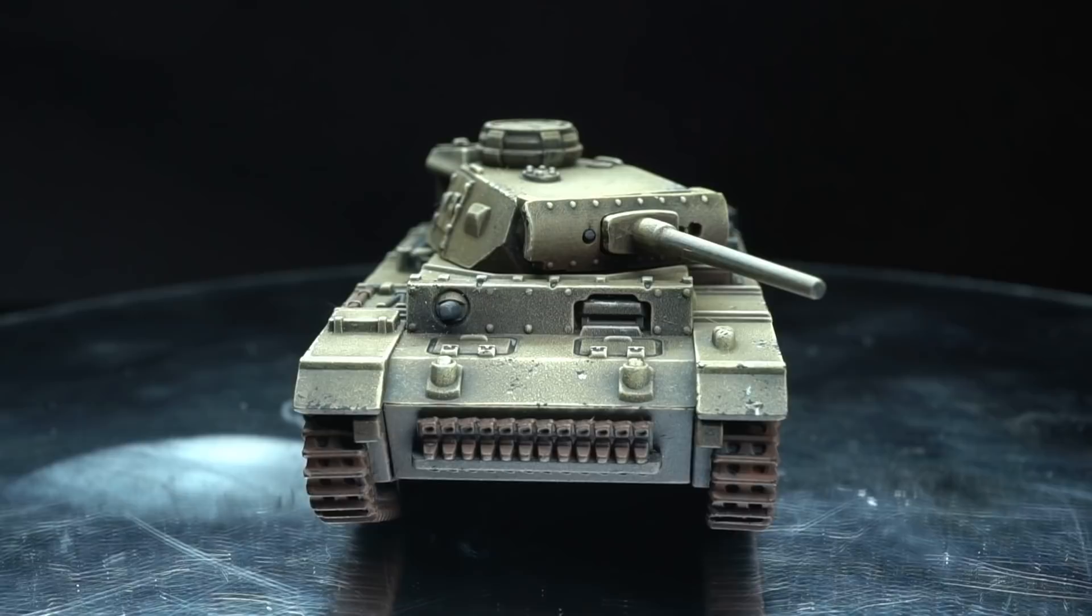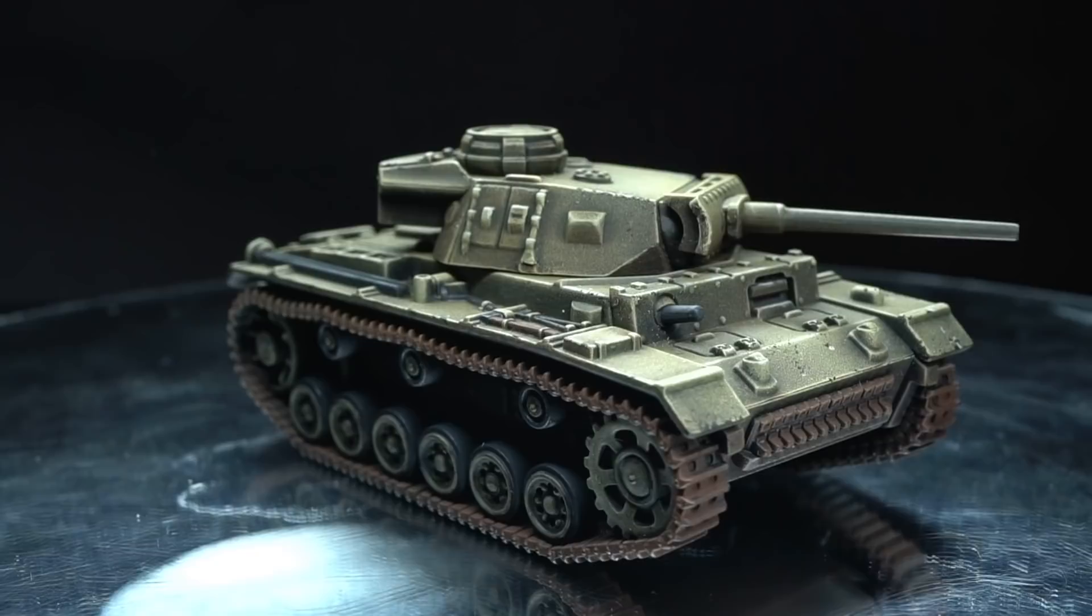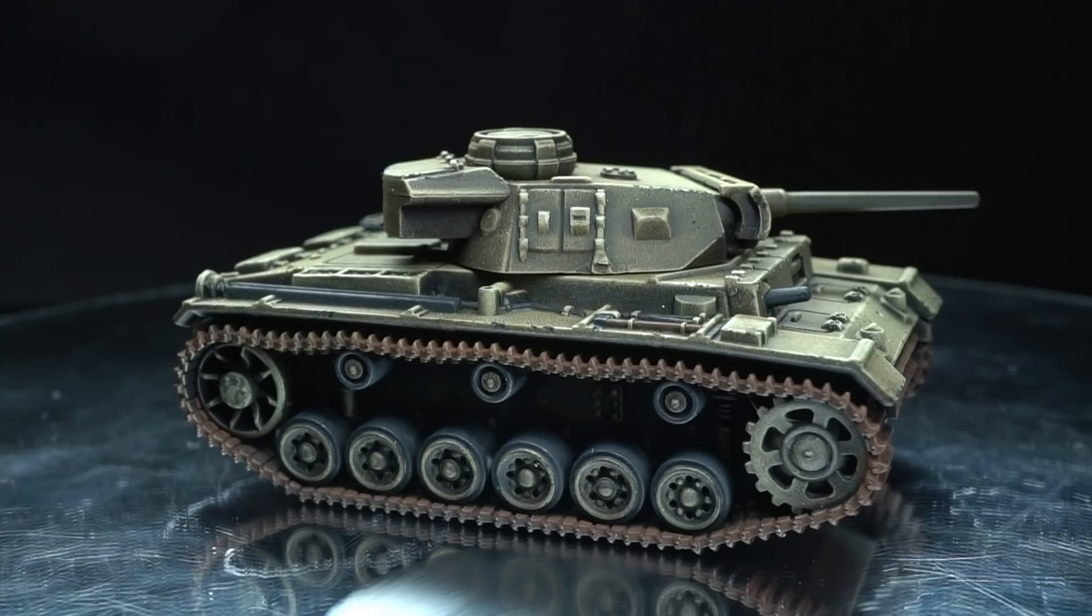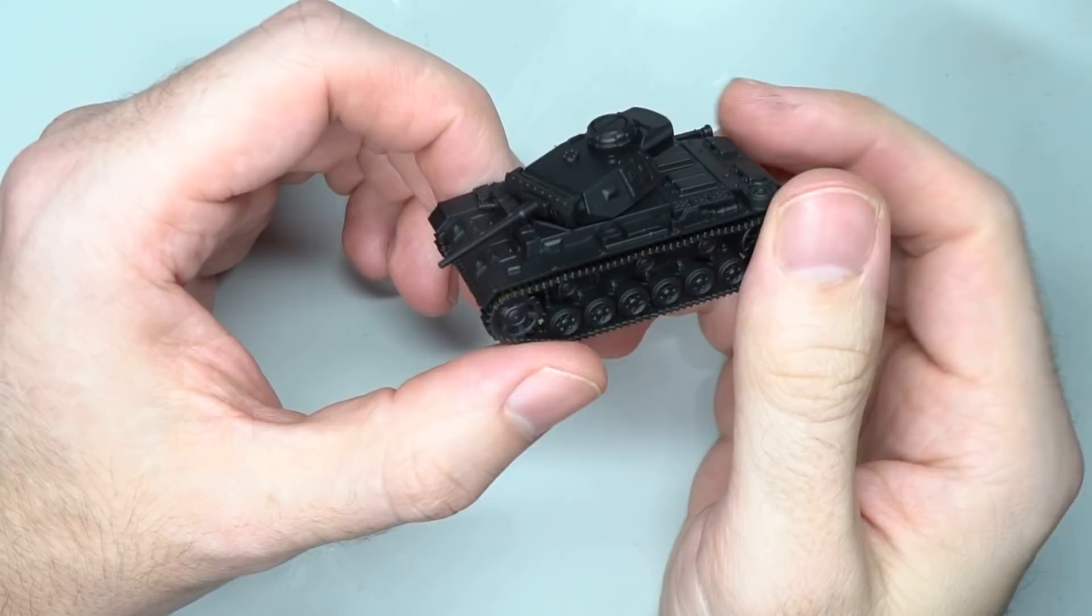With the release of the new North Africa Mid-War Forces book for Flames of War, I thought it was a good time to show you how to paint some more 15mm tiny scaled tanks. I'm Pete the Wargamer, and in this video I'll be showing you how to paint this Panzer III in an Afrika Korps scheme, using some of the Vallejo range of paints.